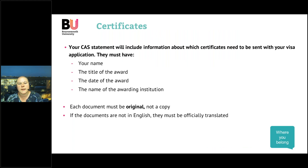When you receive your CAS statement from BU, we will include the certificates we looked at to grant your CAS and make your offer. You must submit those certificates with your visa application. The certificates must have your name, the title of your award, the date of the award, and the name of the awarding institution. Each document must be the original — you can't send a copy, even a certified copy. If documents aren't in English, they must be officially translated, and I will explain how the UKVI requires official translations to be done.